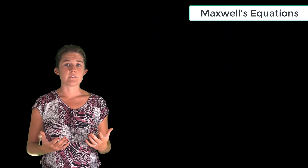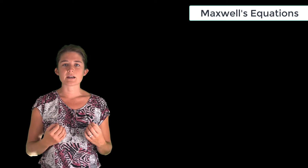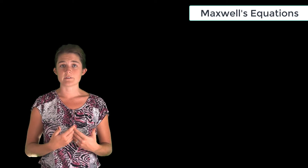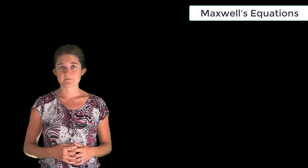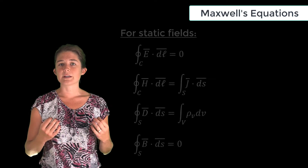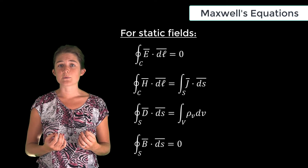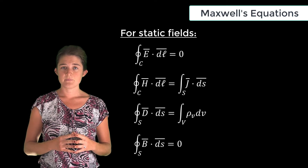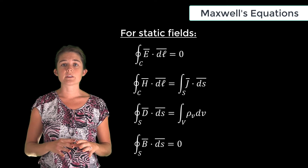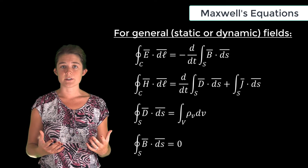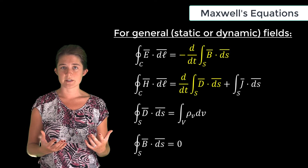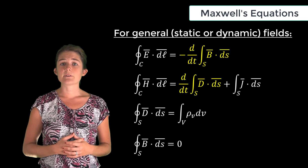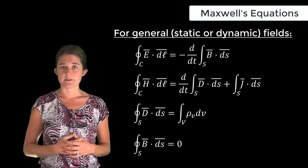All of electromagnetic theory is built around Maxwell's equations, the four fundamental laws of electromagnetics. In an earlier module we examined Maxwell's equations for the simplified case of static fields. In this module we're going to look at the full equations, which have a few more terms than we've seen previously and which are valid for analyzing time-varying scenarios.